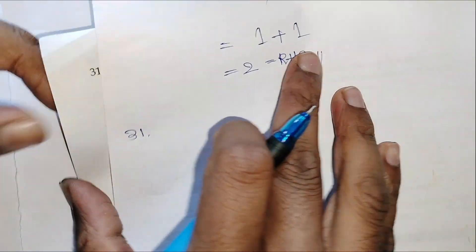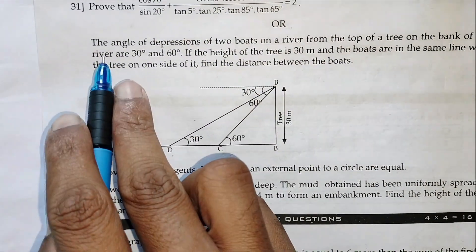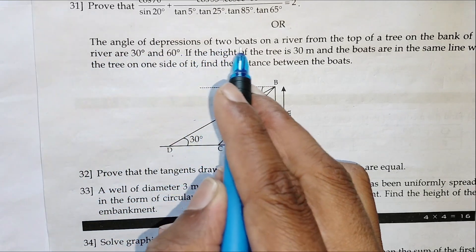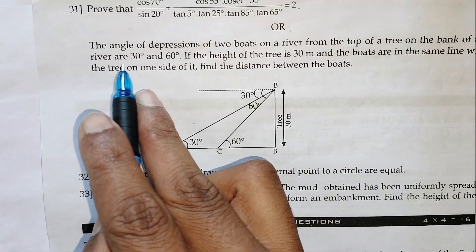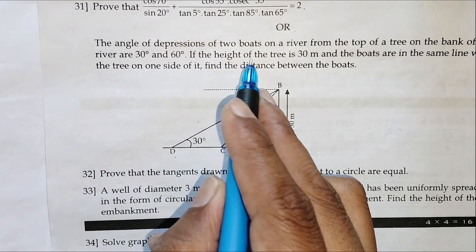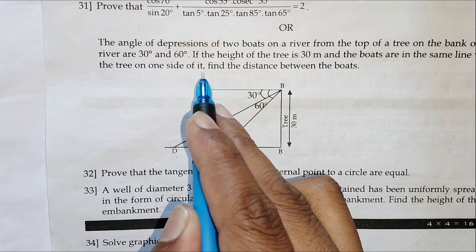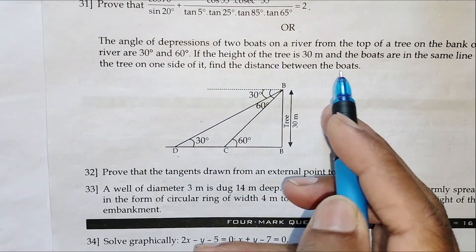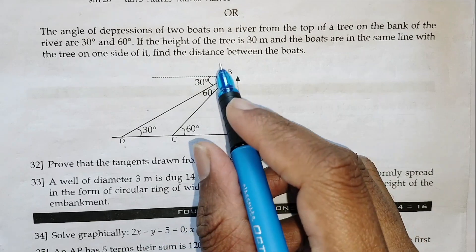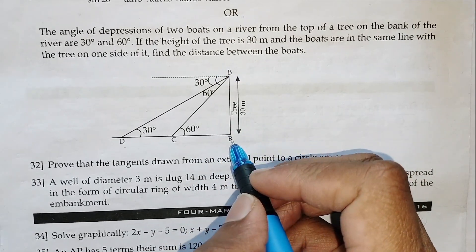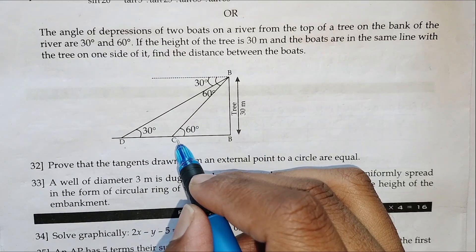Next, we go to another problem — also 31st and also trigonometric — where angle of depression comes into picture. The problem is: the angles of depression of two boats on a river from the top of a tree on the bank of the river are 30 degrees and 60 degrees. If the height of the tree is 30 meters and the boats are in the same line with the tree on one side, find the distance between the boats.